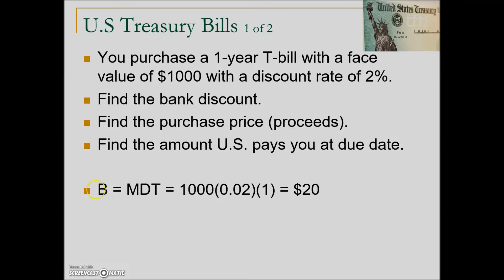To calculate the bank discount, or the cost of this loan, we take the maturity value — the $1,000 or face value — times the discount rate of 2%, times the time in terms of years, which is 1. This gives us a bank discount of $20.